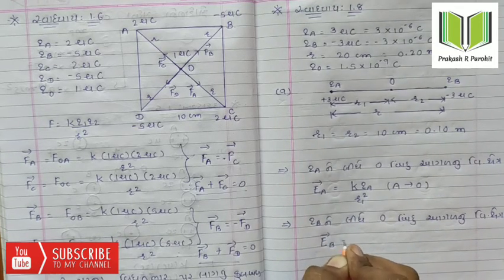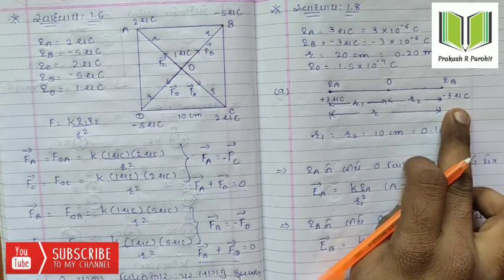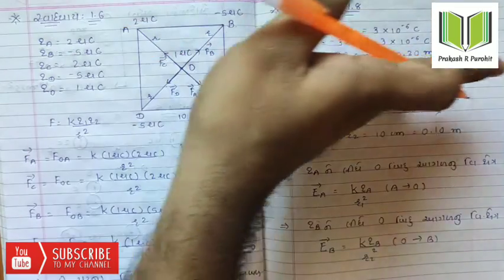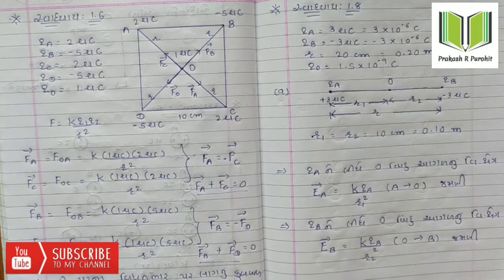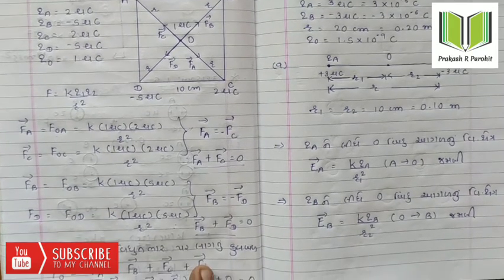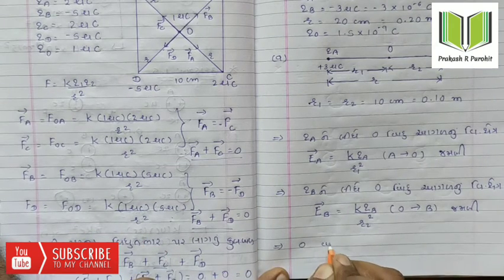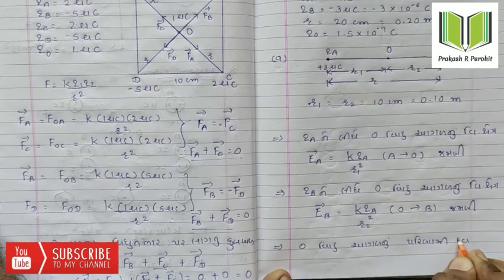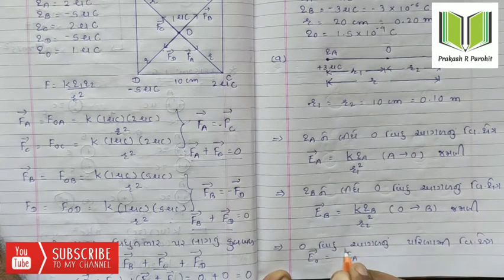The electric field due to charge B at the midpoint is: EB is equal to K times QB upon R2 squared.